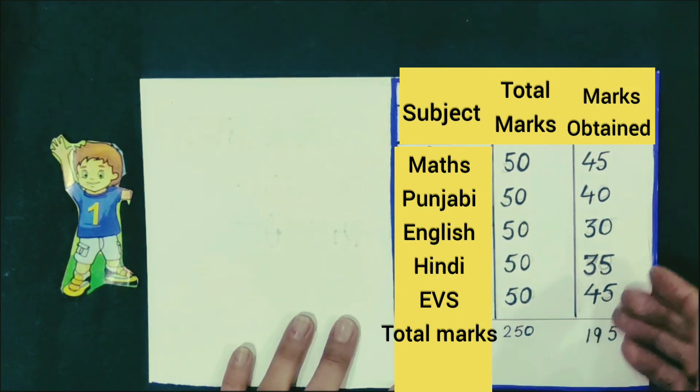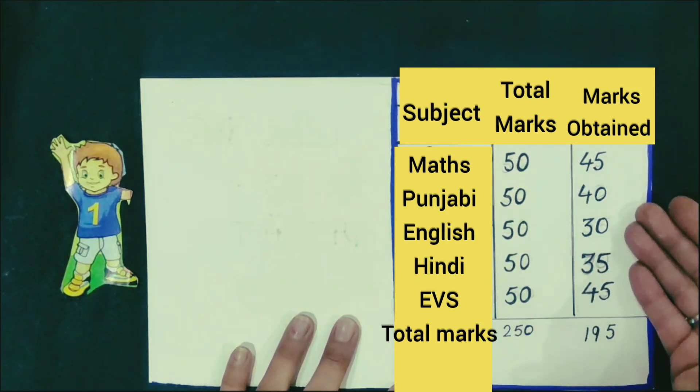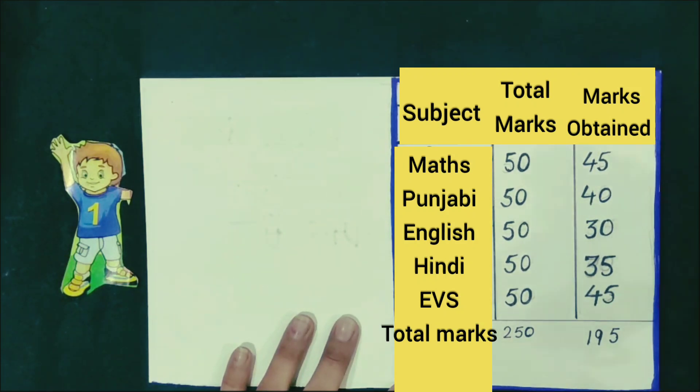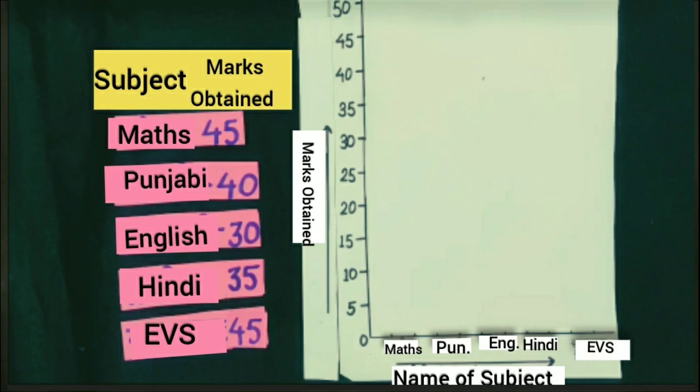Now we will represent the marks obtained by Harman in a bar graph. A bar graph is a graph which shows data vertically. The length of the rectangular bar depends on the given data. In a pictograph, we used different pictures, but in a bar graph we will use rectangular bars.